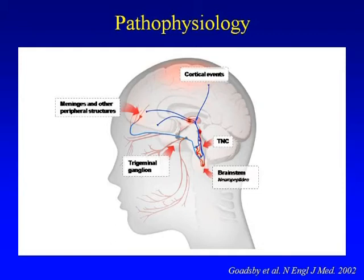Here we have perivascular nociceptors. When there is dilation of vessels, there is a leak of neuropeptides — CGRP, vasoactive peptides, neurokinin A — which can activate peripheral nociceptors, leading to peripheral sensitization. Interestingly, there is also antidromic stimulation, where the activation of neurons causes vessel dilation through the connection of nerve endings with vessels.